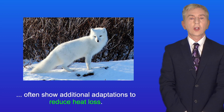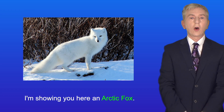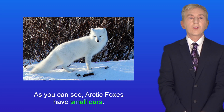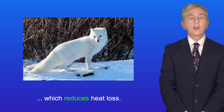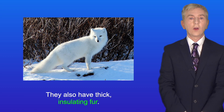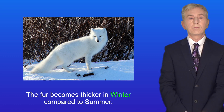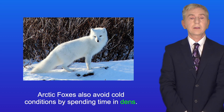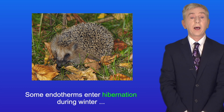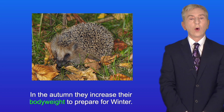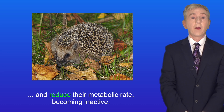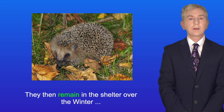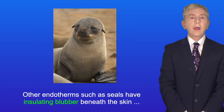Endotherms living in cold conditions often show additional adaptations to reduce heat loss. I'm shown here an Arctic fox, which lives in cold conditions. Arctic foxes have small ears, giving them a relatively low surface area to volume ratio, which reduces heat loss. They also have thick insulating fur that becomes thicker in winter compared to summer. Arctic foxes also avoid cold conditions by spending time in dens. Some endotherms enter hibernation during winter — for example, hedgehogs increase their body weight in autumn, then enter a shelter and reduce their metabolic rate, becoming inactive and emerging from hibernation in spring. Other endotherms such as seals have insulating blubber beneath the skin, which reduces the rate of heat loss.